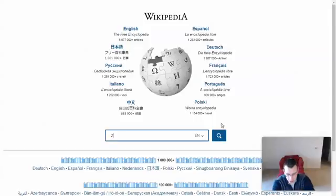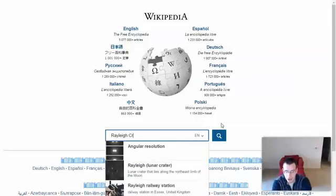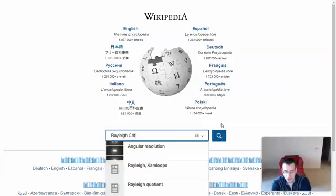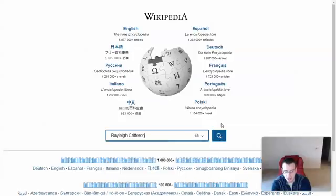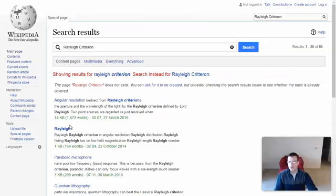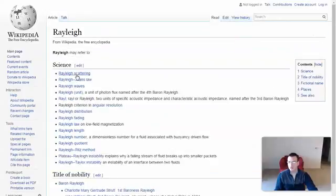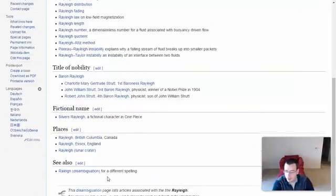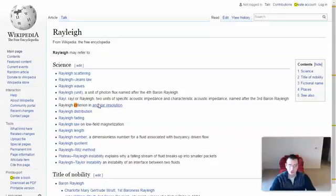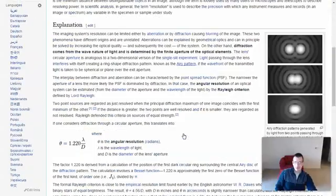Actually, maybe if I do it here, make sure I'm Raleigh criterion. Raleigh. Angular resolution. Yep. That's like I said. D is the diameter of the lens. Yep. Lambda is the wavelength. Yep.